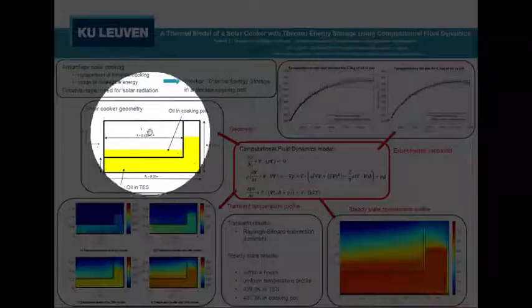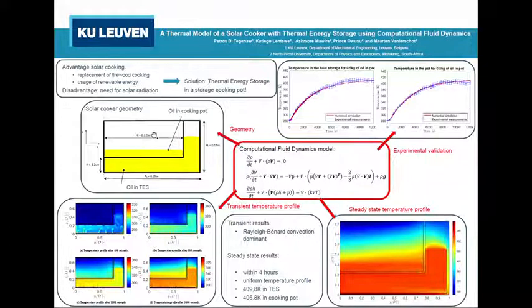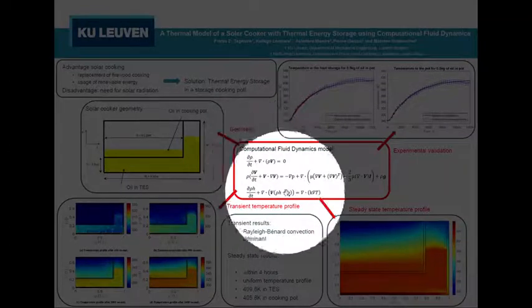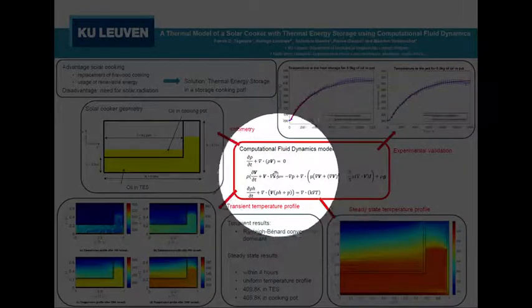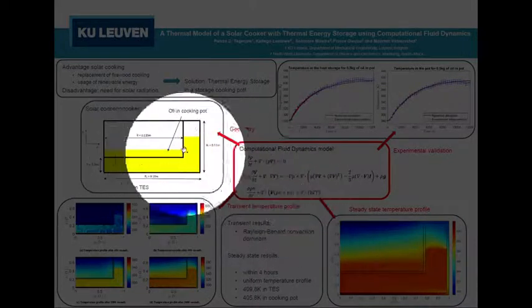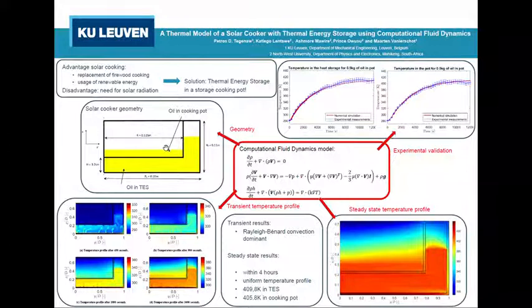As oil and air above is a fluid, we use computational fluid dynamics to solve the equations, which describe the velocity field V, the density field rho, the pressure field P, and the temperature and the enthalpy here inside this solar cooker.